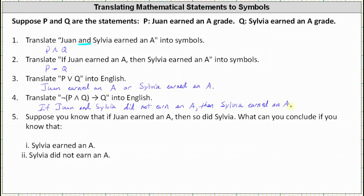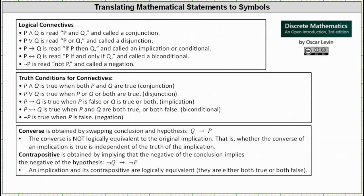Before we take a look at number five, let's review converse and contrapositive. Assuming the implication is if P then Q, the converse is obtained by swapping the conclusion and hypothesis, so the converse of if P then Q is if Q then P. The converse is not logically equivalent to the original implication — that is, the truth of the converse is independent of the truth of the implication. The contrapositive of if P then Q is if not Q then not P, and an implication and its contrapositive are logically equivalent, meaning they're both true or both false.